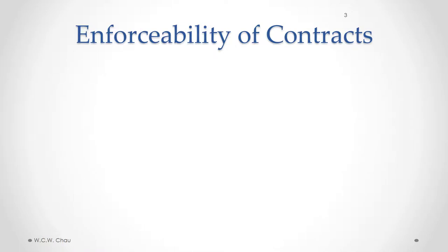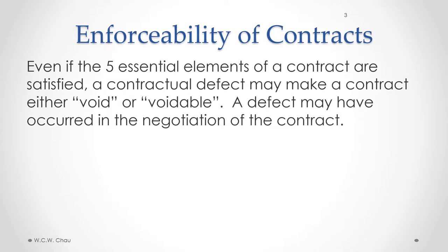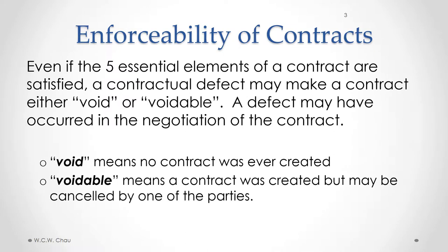Let's now look at the enforceability of contracts. Even if all five of those essential elements of a contract are satisfied, a contractual defect may make a contract either void or voidable. A defect may have occurred in the negotiation of the contract. Void means that no contract was ever created, and voidable means a contract was created but may be cancelled at the option of one of the parties.